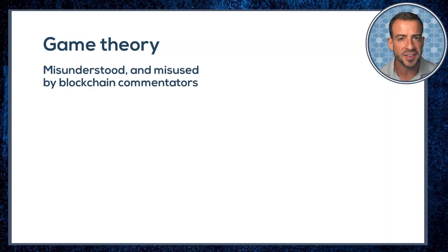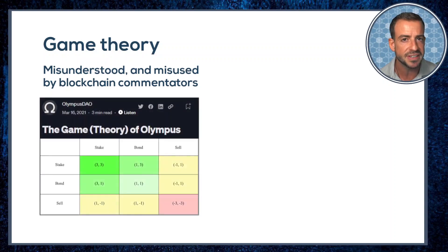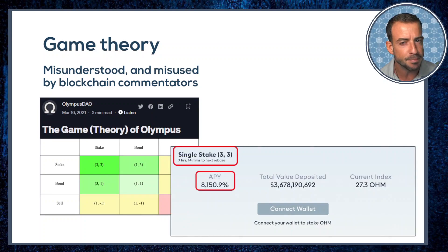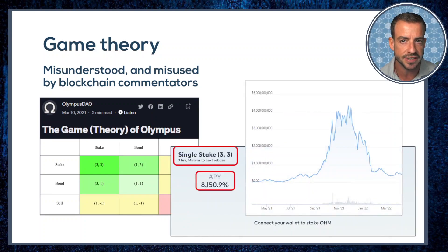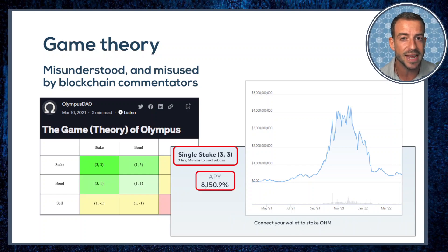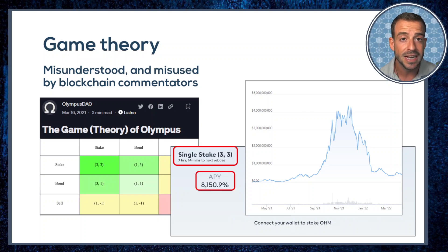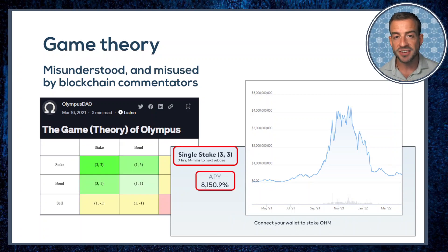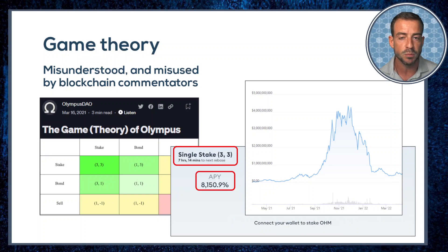The worst example I can think of is OlympusDAO's payoff matrix, which it used prominently to market the supposedly sound fundamentals of its design. This project at its peak had a market cap exceeding $4 billion and a peak daily volume of around half a billion US dollars. As you can see, a lot of people lost a lot of money. In order to explain just what the problem is with this representation, we need to cover some of the limitations and misunderstandings around game theory more generally.